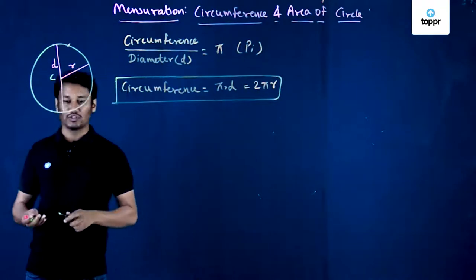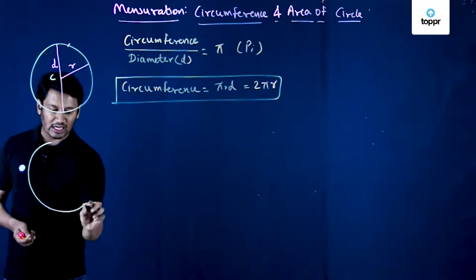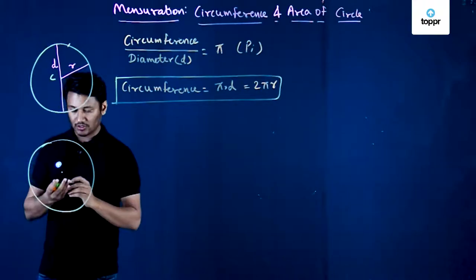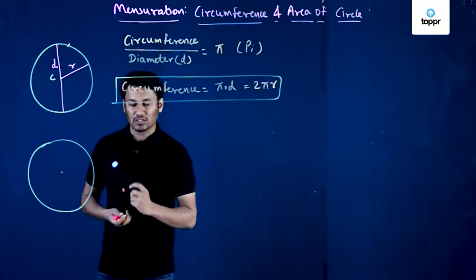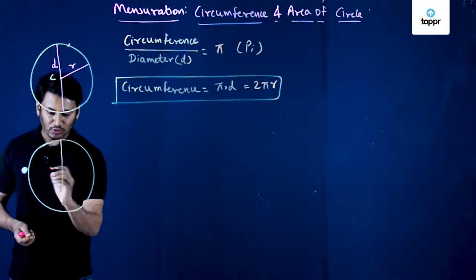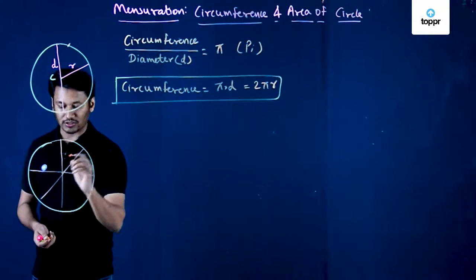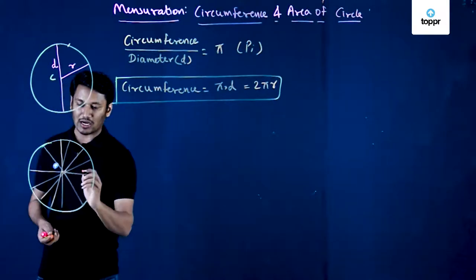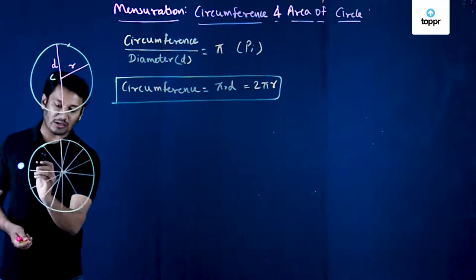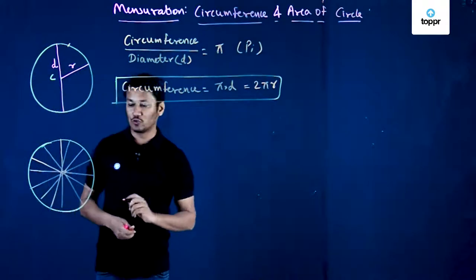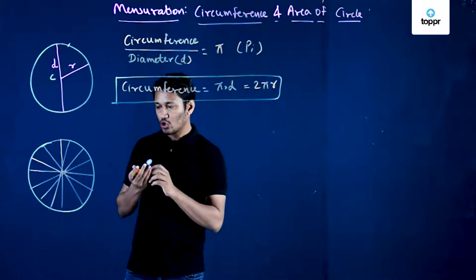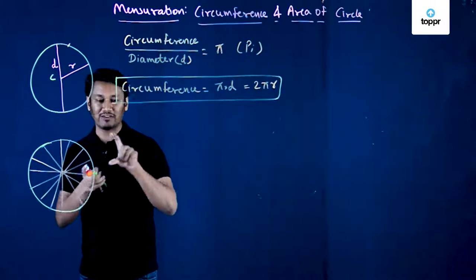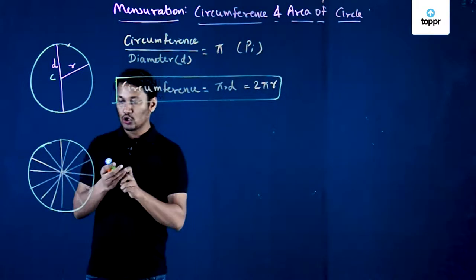Let us now talk about the area of the circle. To discuss area, I will once again consider a circle with its center. To express area of a circle, I can divide the circle into many small sectors, using diameters all passing through the center of the circle. Now I am going to replace all these sectors by taking one sector at a time and placing it in a very specific way.